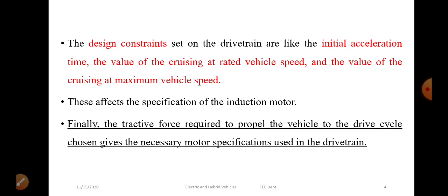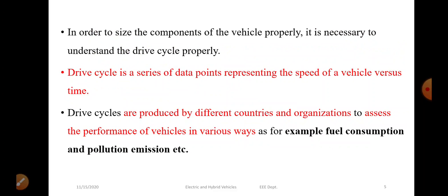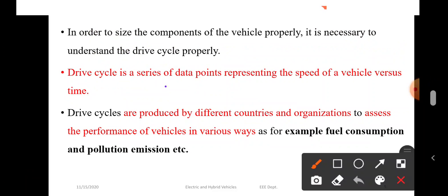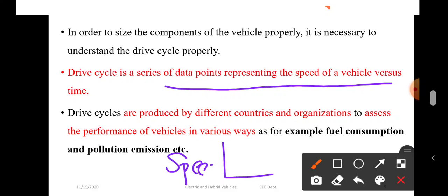Cruising at a constant speed will move the vehicle, and the specific specifications determine the design constraints. Finally, we calculate the tractive force required to propel the vehicle through the drive cycle. The chosen drive cycle gives the necessary motor specifications used in the drive train. In summary, a drive cycle is a series of data points representing the speed of the vehicle versus time.